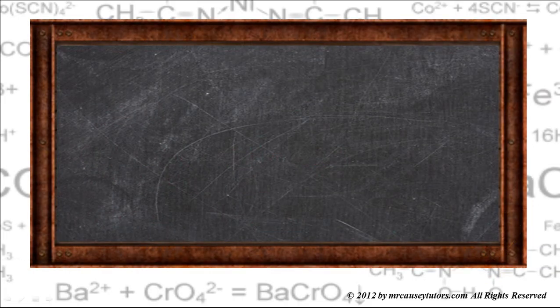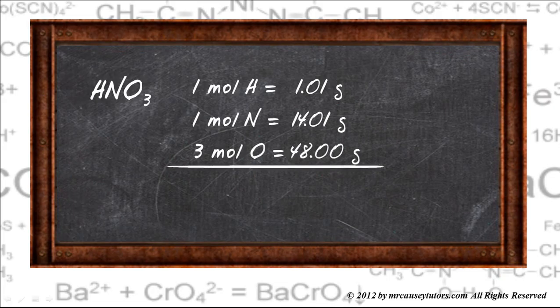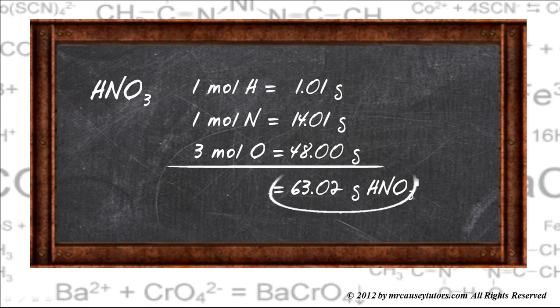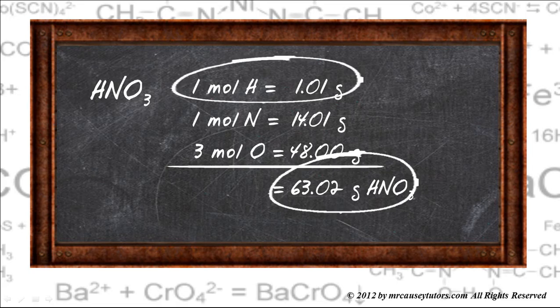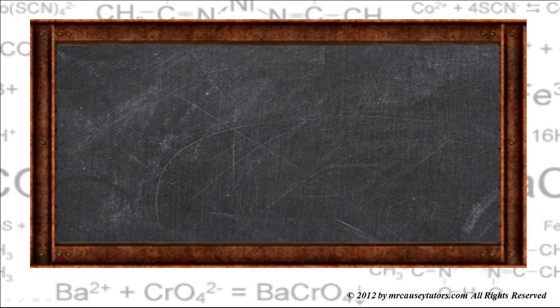So let's look at that problem. Let's go to the magic blackboard. HNO3 is molar mass. Well, we have one mole of hydrogen. We have one mole of nitrogen and three moles of oxygen. And we can get all these values off the periodic table. That adds up to 63.02 grams of nitric acid. And, of course, there's one mole of hydrogen, and that's 1.01 grams. So there's our two values.